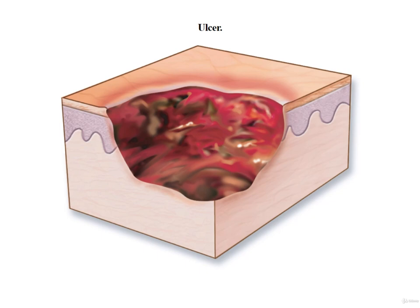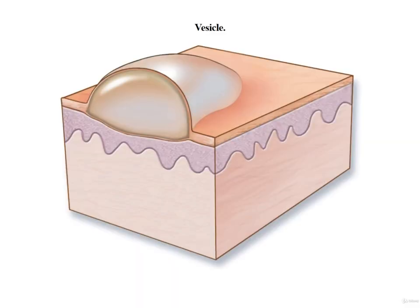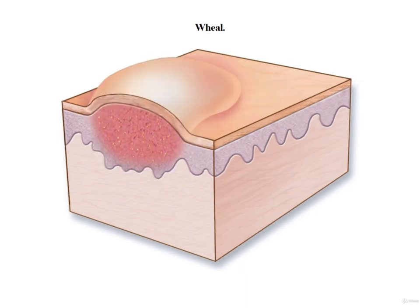Seborrhea means oily discharge. Suppurative means containing or producing pus. An ulcer is an open sore or lesion in the skin or mucous membrane. This illustration depicts a pustule, and on this slide we have an illustration of an ulcer. Urticaria, commonly known as hives, is a skin eruption of pale reddish wheals with severe itching; it's usually associated with a food allergy, stress, or drug reaction. A vesicle is also known as a blister — it's a small, fluid-filled, raised spot on the skin. A wheal is a small, round, swollen area on the skin typically seen in allergic skin reactions such as hives. Xeroderma is a condition in which the skin is abnormally dry.